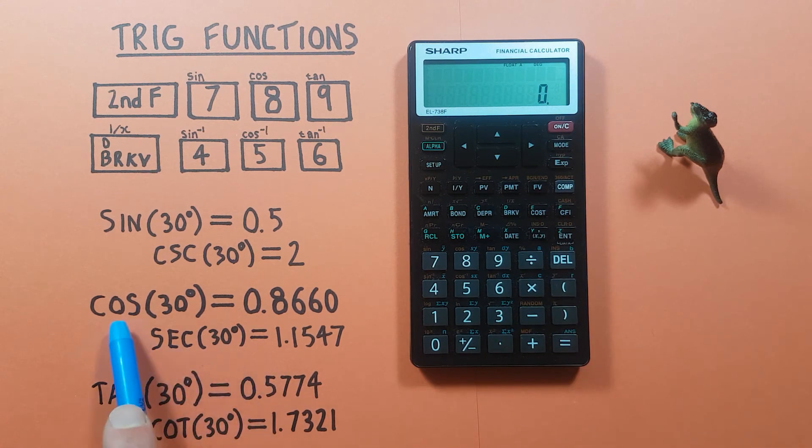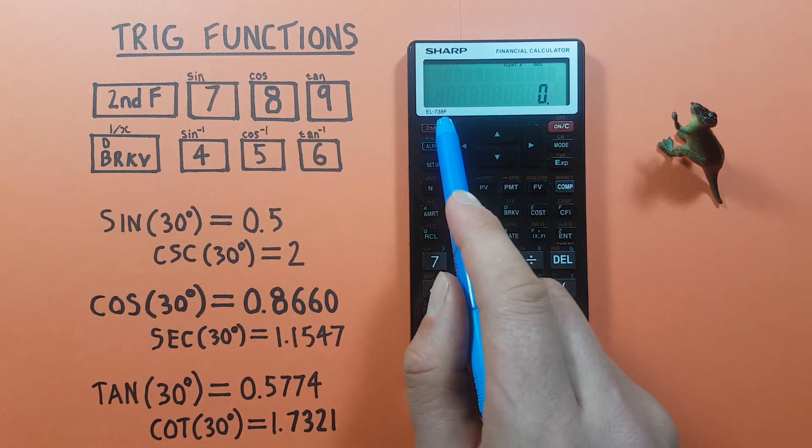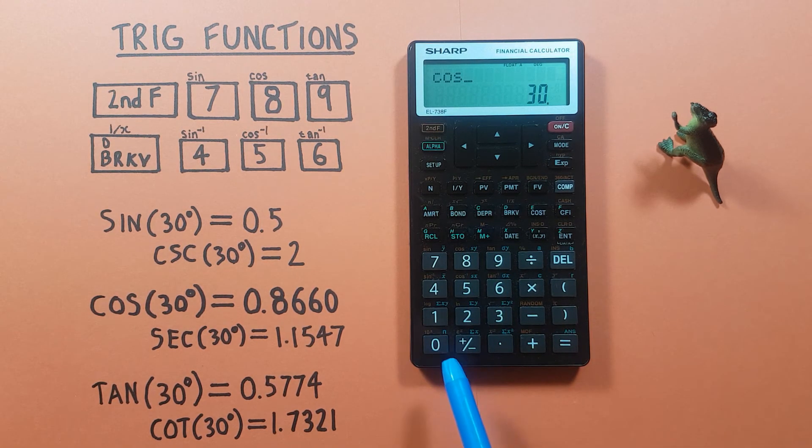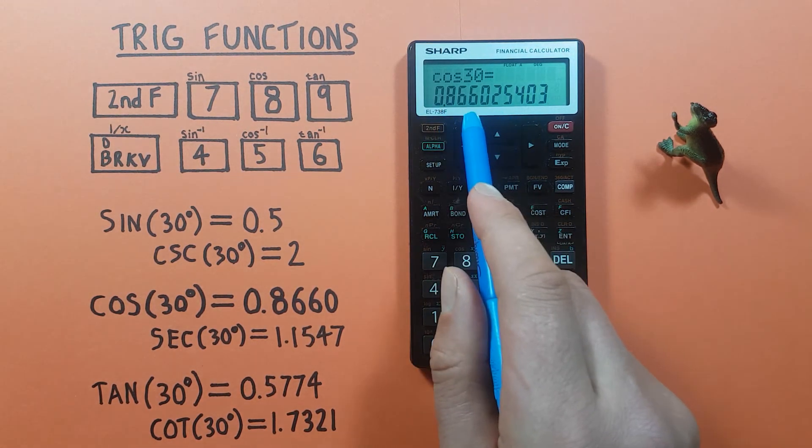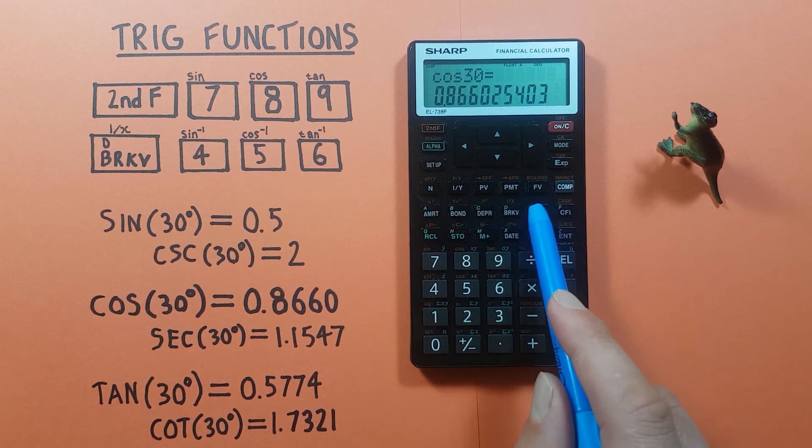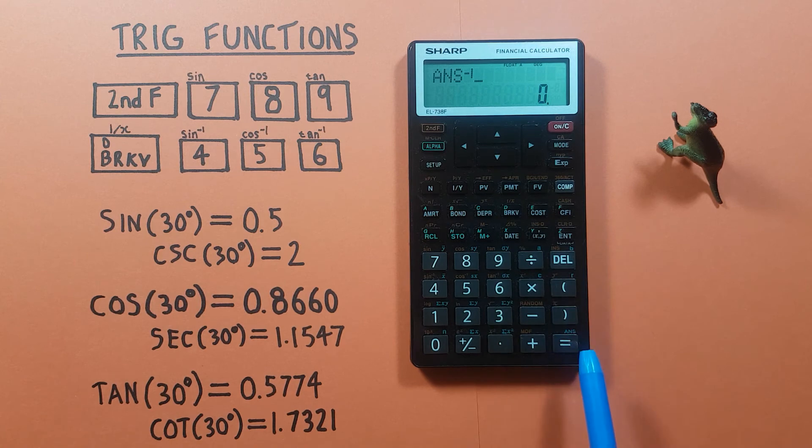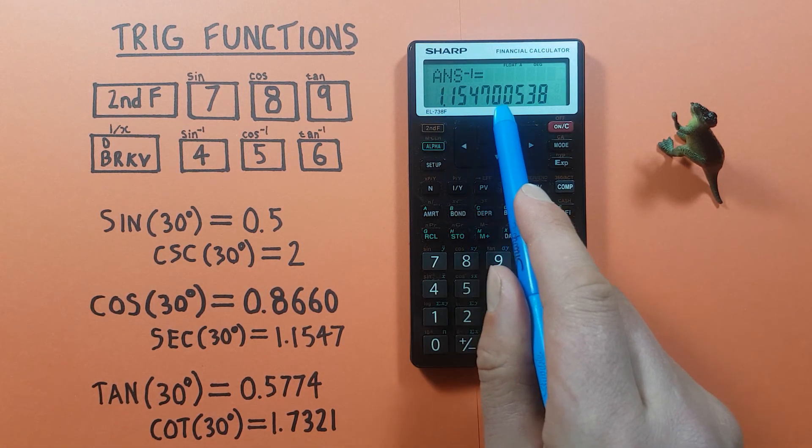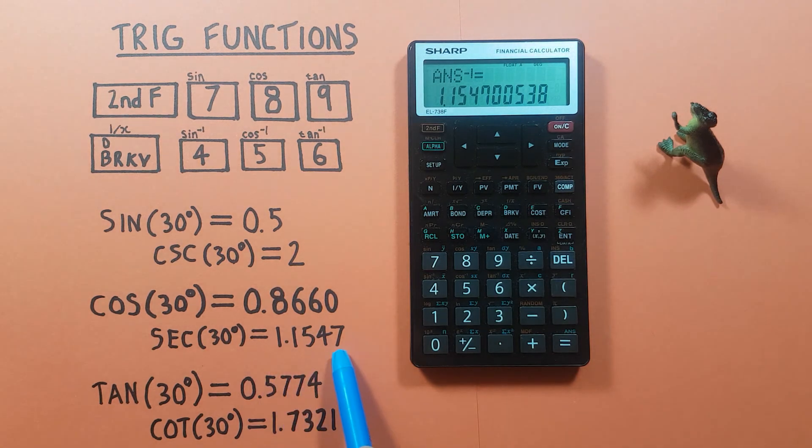For secant we use cos, so second, cos, 30 degrees, equals. That's what we got, and then we can inverse this again, second, there we go, and equals. This gives us 1.154, etc. Yep, that's correct.